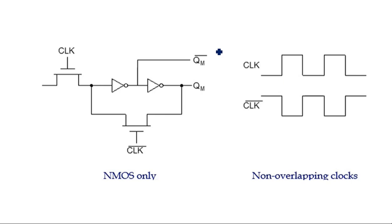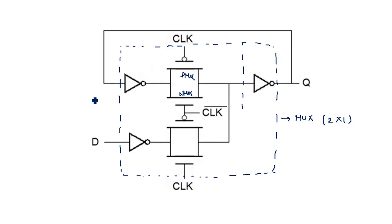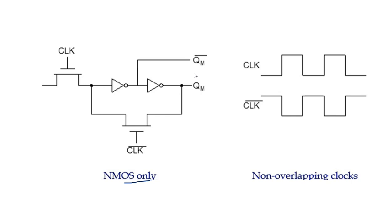The same MUX-based latch can also be implemented using NMOS transistors only, with non-overlapping clocks. Instead of transmission gates with both PMOS and NMOS, this configuration uses a pure NMOS transistor with clock as control input, followed by a CMOS inverter. A complement is taken from the center, and another NMOS transistor with clock̄ input controls the feedback path.